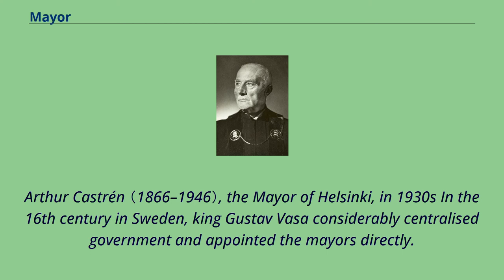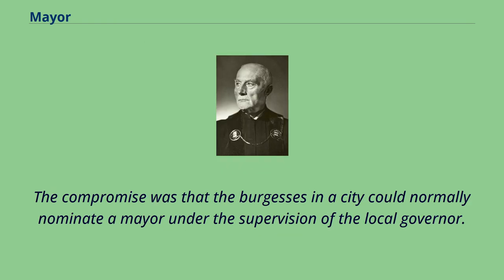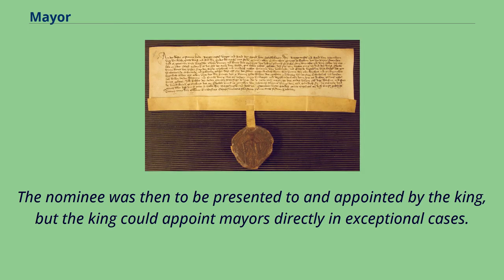In the 16th century in Sweden, King Gustav Vasa considerably centralized government and appointed the mayors directly. In 1693 King Charles XI accepted a compromise after repeated petitions from the estate of the burgesses over decades against the royal mayor appointments. The compromise was that the burgesses in a city could normally nominate a mayor under the supervision of the local governor, and the nominee was then to be presented to and appointed by the king, though the king could appoint mayors directly in exceptional cases.